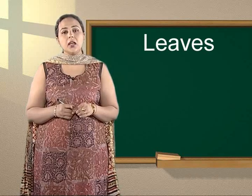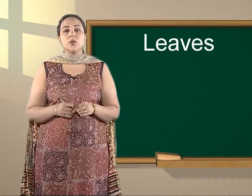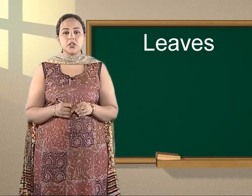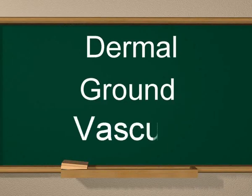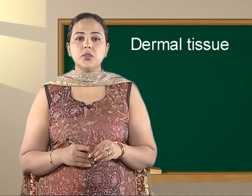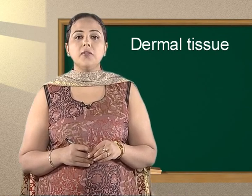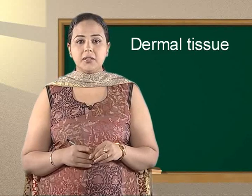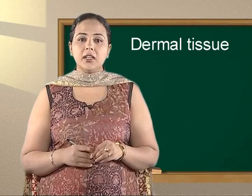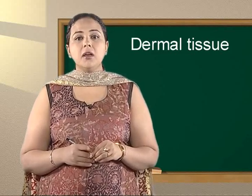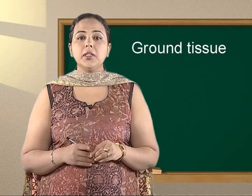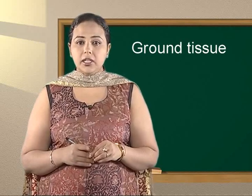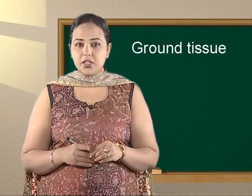Like stems and roots, leaves also have the three tissue systems: dermal, ground and vascular. The dermal tissue system consists of an upper epidermis and lower epidermis. Stomata occur in both the epidermis but their number is more on the lower epidermis. The ground tissue that lies between the epidermal layers of the leaf is known as mesophyll tissue.